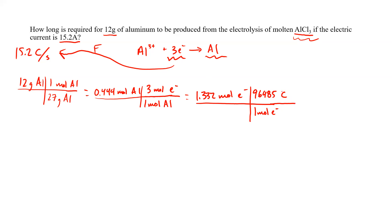So now that we've got it to coulombs, we can relate it to our amperage, which is coulombs per second. I'm going to solve for 1.332 times 96,485 which equals 128,518.02 coulombs.